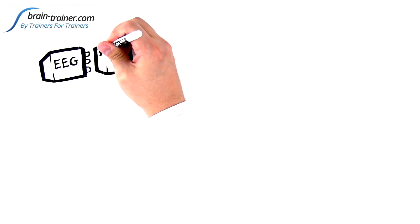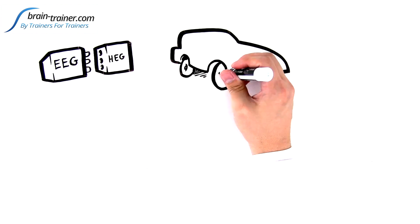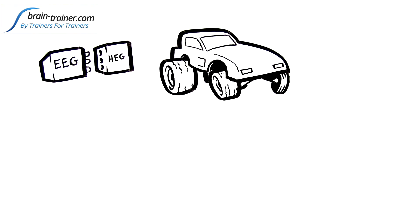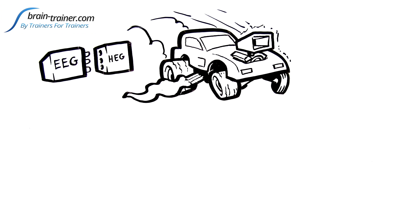Whole Brain Training combines two technologies called EEG and HEG. If your brain were a car, HEG would improve the steering and brakes. EEG would improve the engine and transmission. Different jobs, but they work together.